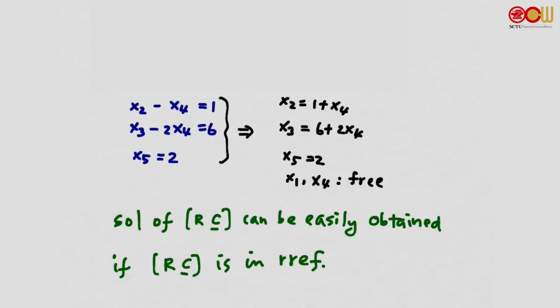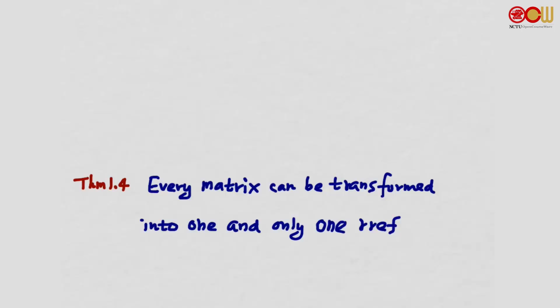So whenever we are given a system of linear equations, one approach is to first convert the augmented matrix into RREF using Gaussian elimination, and then easily obtain the solution. Theorem 1.4 states: every matrix can be transformed into one and only one reduced row echelon form using elementary row operations. There is exactly one RREF for each matrix. The proof can be found in Appendix E.